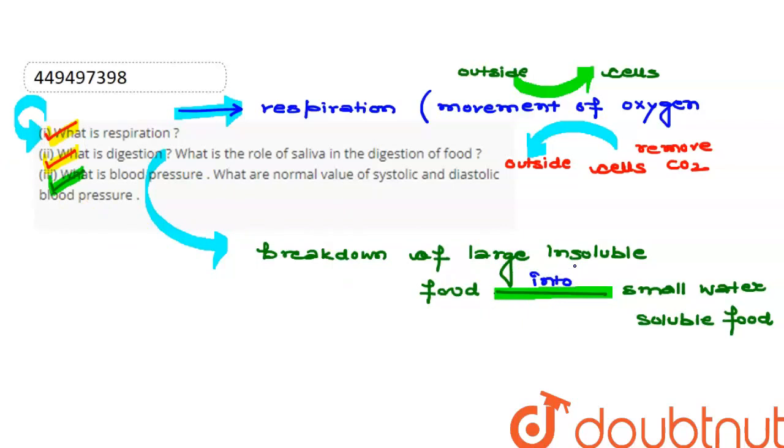So this is the function of digestion which breaks down starch. Saliva helps with chewing and swallowing, which aids digestion. Then the lubrication effect helps to moisten the mouth and make food smoother to swallow. So these are basically the functions and roles of saliva.